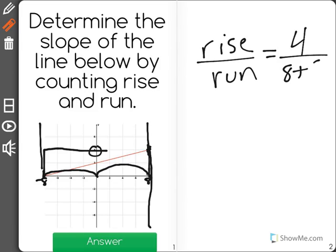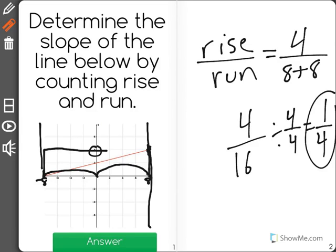So that's over 8 plus 8, which is equal to 4 over 16. Now, it's always important to simplify this. We could divide both sides by 4 to get a slope of 1 fourth for the correct answer.